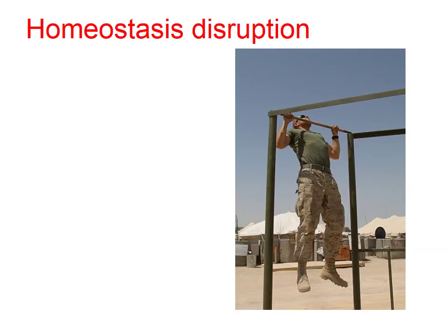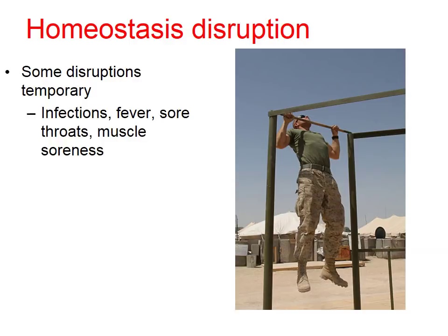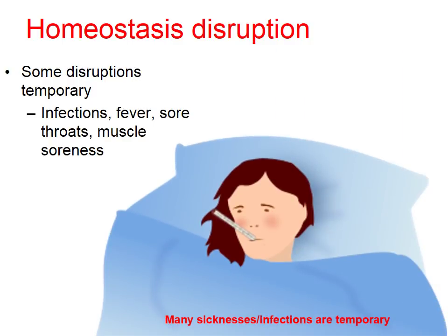Every now and then, our body will experience disruptions to our normal levels of fluids and temperatures — homeostasis can become disrupted. Most disruptions are temporary. We've all had infections, fevers, and sore throats, and if you do enough pull-ups you'll have muscle soreness later in the day or the next day. These are all fairly temporary. Our immune system fights off the infection and we feel better.